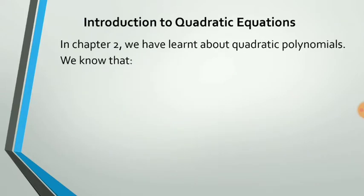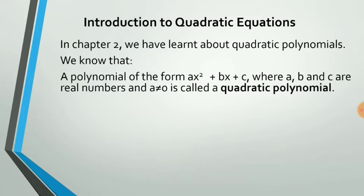Now let us take up quadratic equations. In chapter 2, we have learned about quadratic polynomials. We all know that a polynomial of the form ax squared plus bx plus c, where a, b and c are real numbers and a is not equal to 0, is called a quadratic polynomial. Now let us take up one example of a quadratic polynomial.